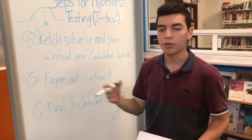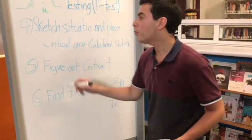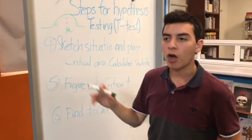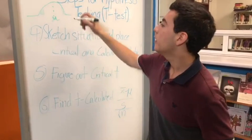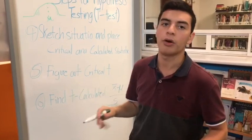Afterwards, we will use this formula to calculate the calculated T. We would put the critical T in the area shaded in such a way that those are the rejection zones of the null hypothesis. And the calculated T would determine if the answer is within the rejection areas or the failing to reject areas or accepting areas of our sketch.